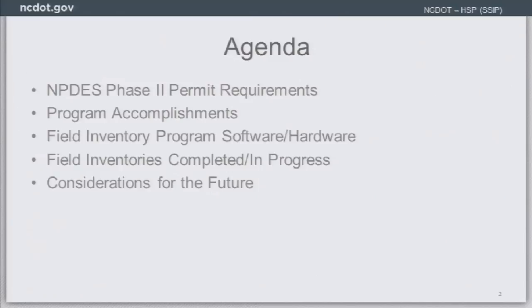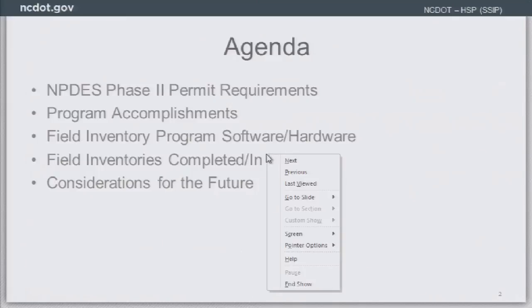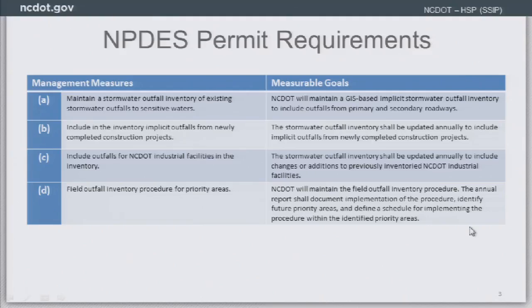The state of North Carolina has an NPDES stormwater permit statewide. It allows discharge from roadways, facilities, ferry terminals, and borrow pits, but also provides guidance on how to manage that stormwater runoff. One program area used to manage this permit is the stormwater outfall inventory program, which includes the field inventory program. Requirements include maintaining a stormwater outfall inventory of existing outfalls to sensitive waters — and really to all waters of the state.